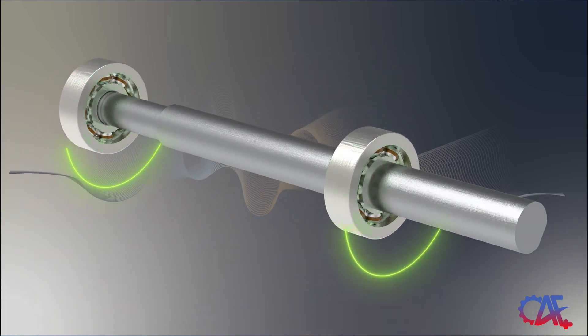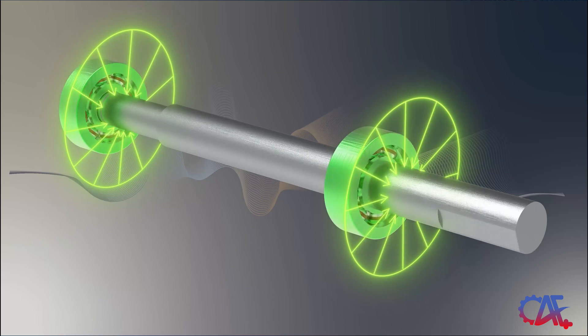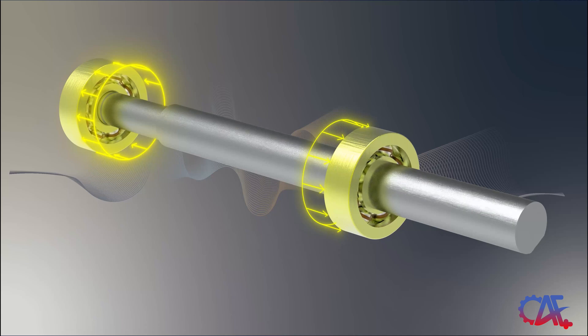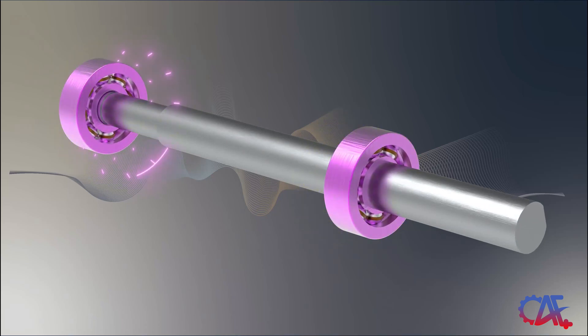Deep groove ball bearings can handle moderate radial loads as shown with green arrows, moderate axle loads as shown with yellow arrows, and moderate combined loads as shown with purple arrows in any direction.